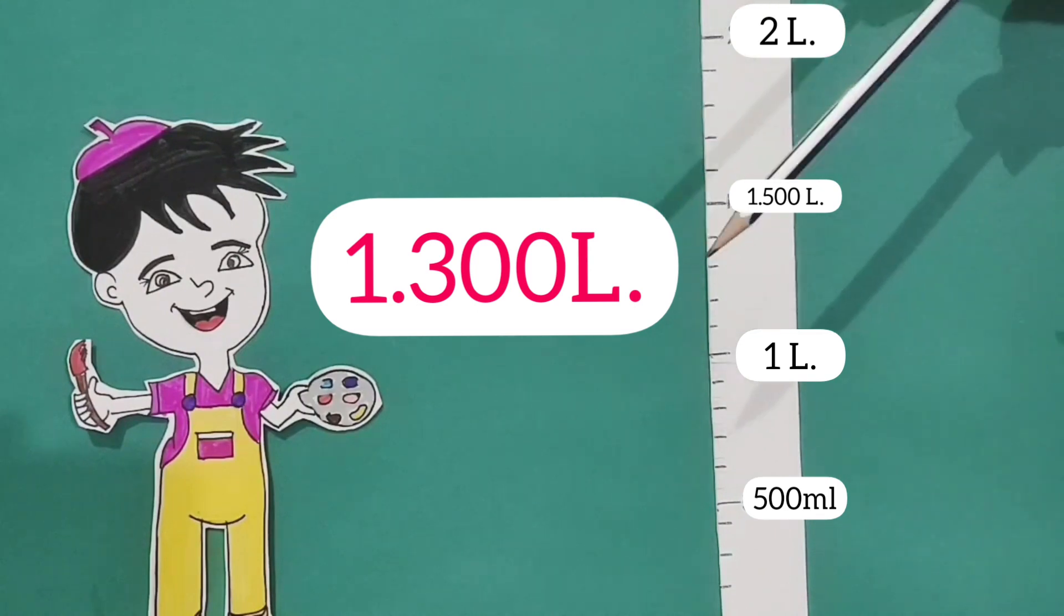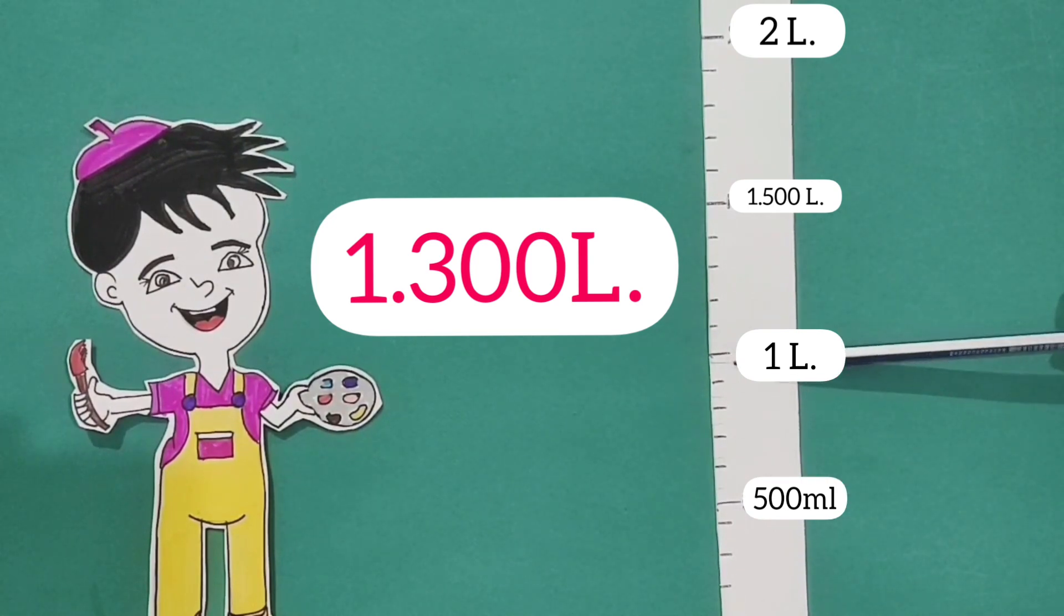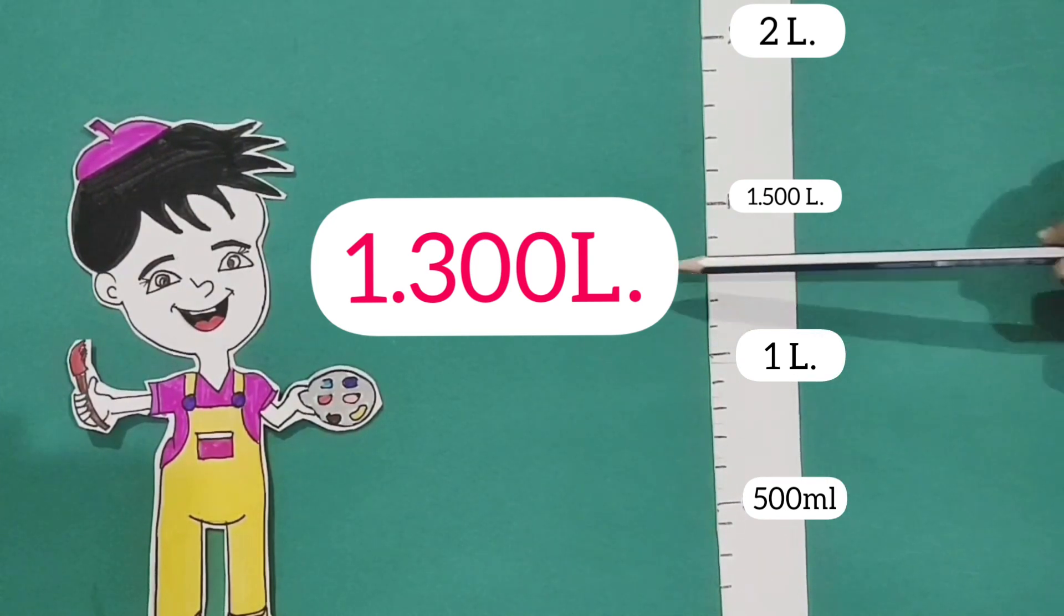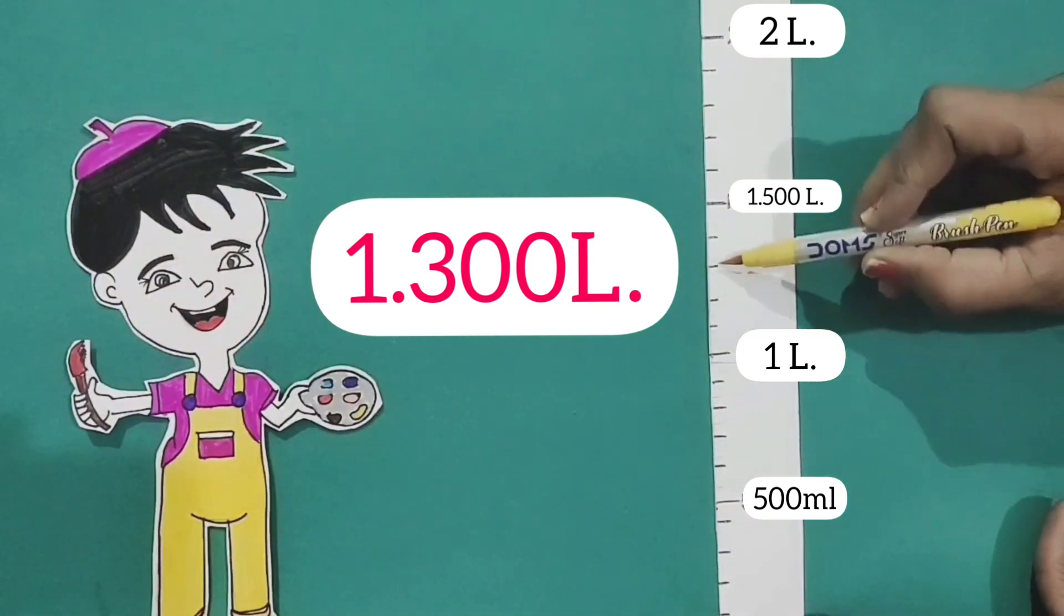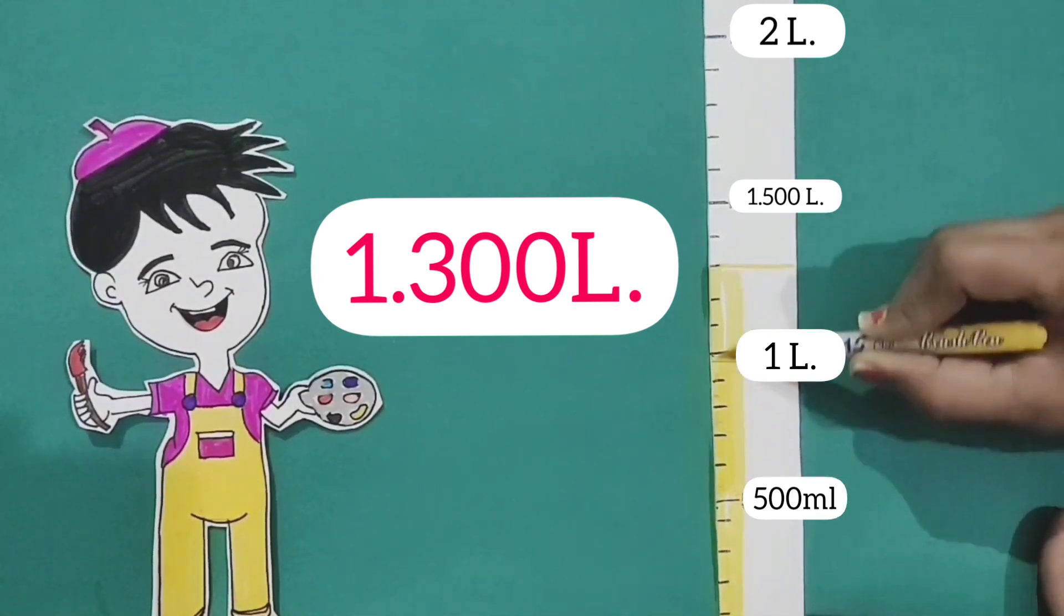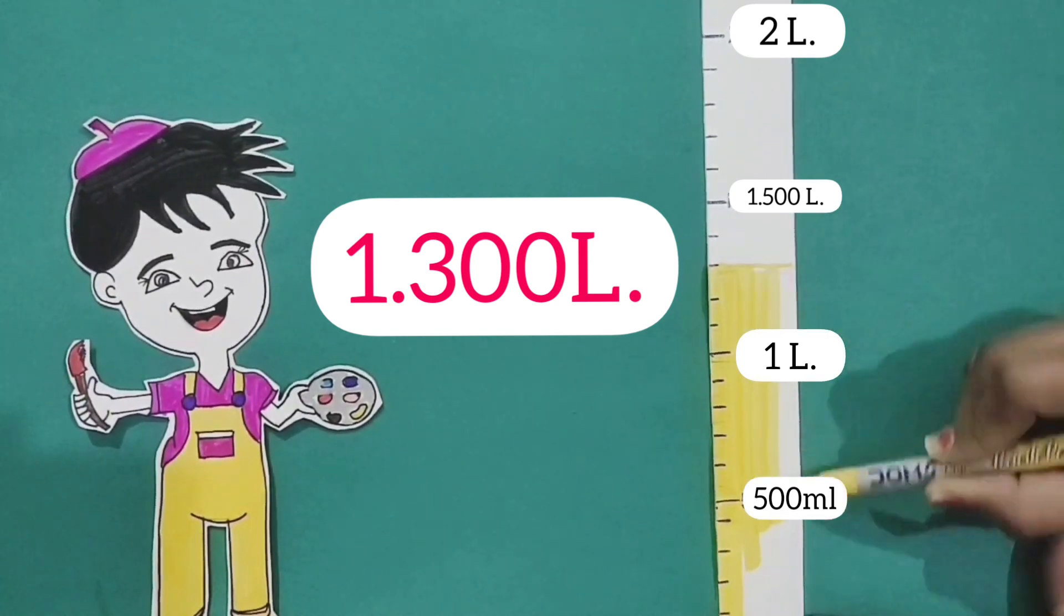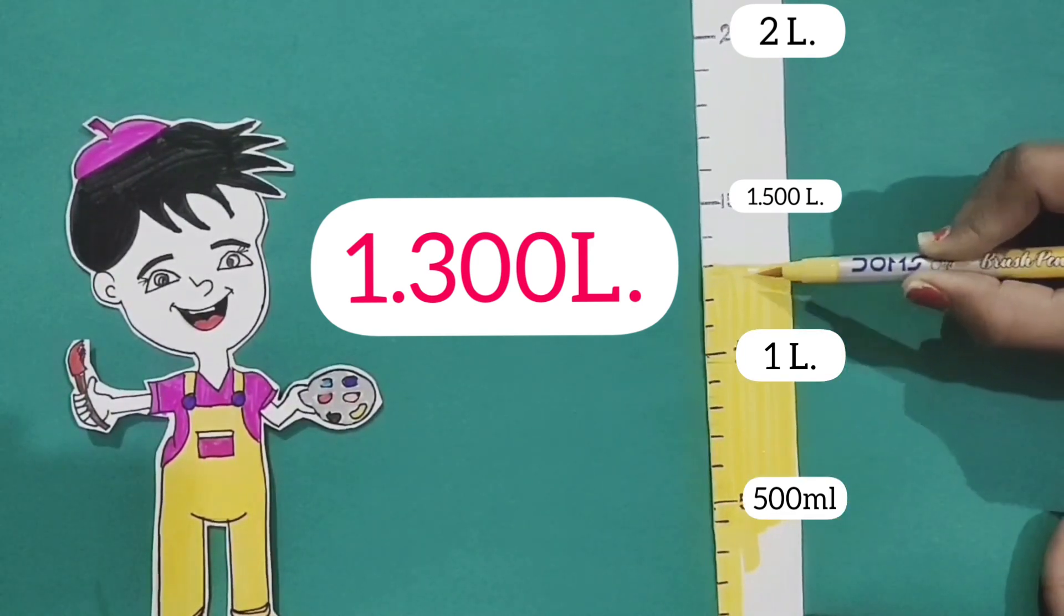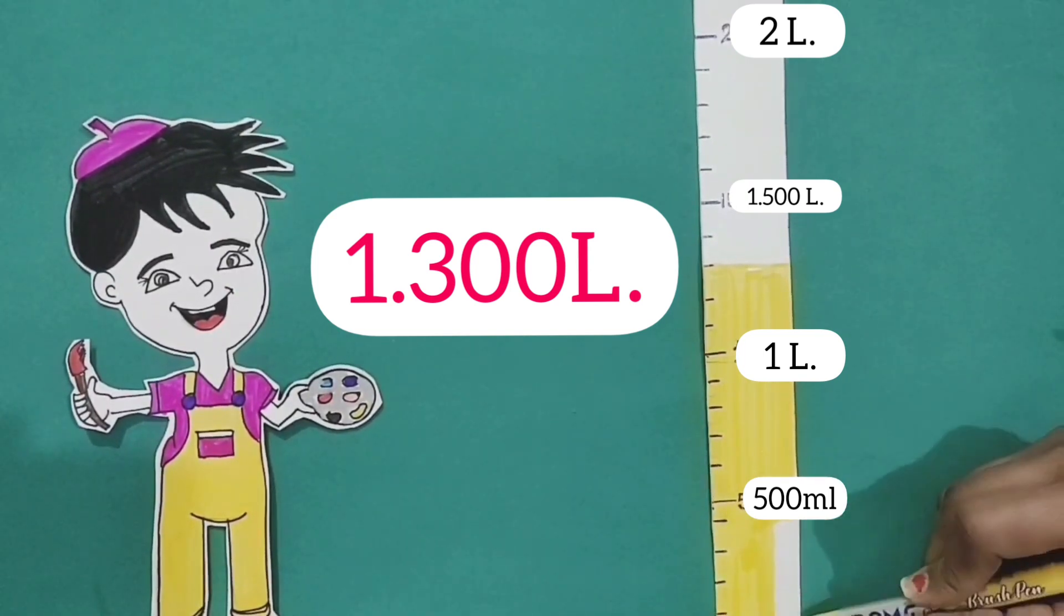In part 1, the amount is 1.300 liter, means 1 liter, 300 milliliters. So, first, let's mark a horizontal line at 1 liter, 300 milliliters. And now, let's fill the color in it. And even, you have to fill the color in your books and notebooks according to the given quantity. So, we'll fill the color up to 1.300 liter in the given scale.